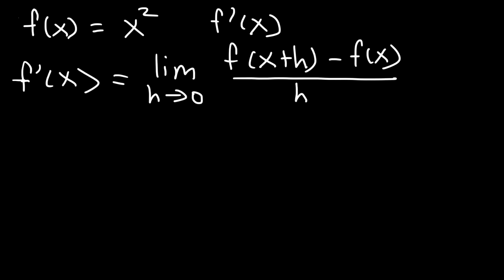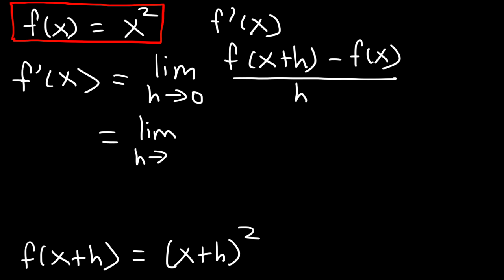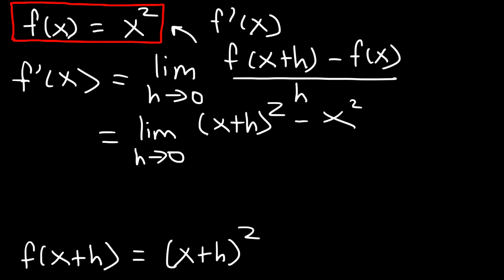So if f of x is equal to x squared, what is f of x plus h? All we have to do is replace x with x plus h. So it's going to be x plus h squared. So we have the limit as h approaches 0 of x plus h squared minus f of x, which is originally just x squared, divided by h.